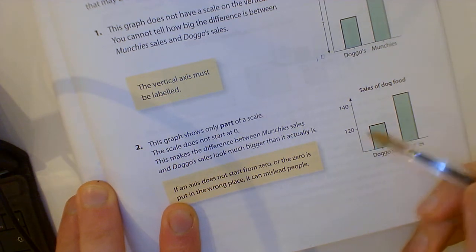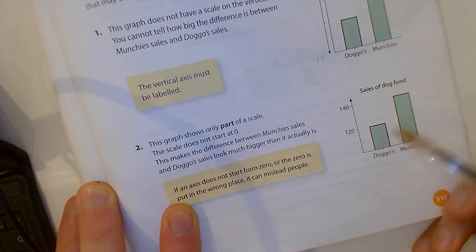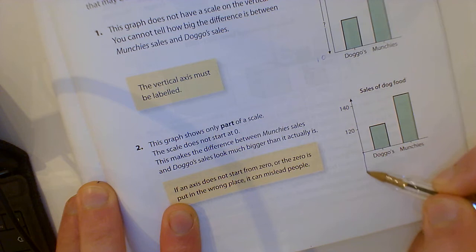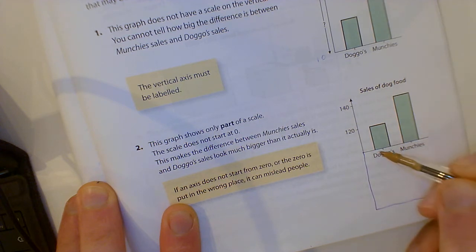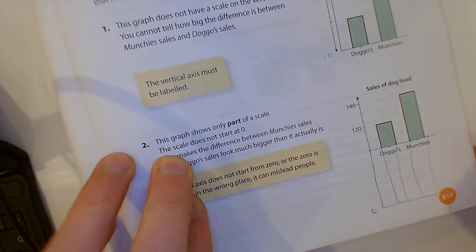it's not reliable. Yeah, because if you look at this here, this looks like Munchies is double Doggos, but it just actually really started at zero. Does it look like it's double it anymore? No. So that is misleading data. You get misled every day of